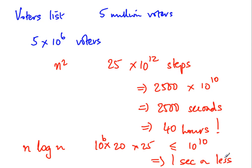So for this voters list with 5 million voters, sorting with an n² algorithm takes 40 hours, while an n log n algorithm takes one second. You can see an enormous usability difference between an inefficient and an efficient algorithm, which you simply don't notice for small inputs. We are really interested in what happens as inputs get large, and in practice real-world data is large — a list of a million items to sort is not unreasonable.